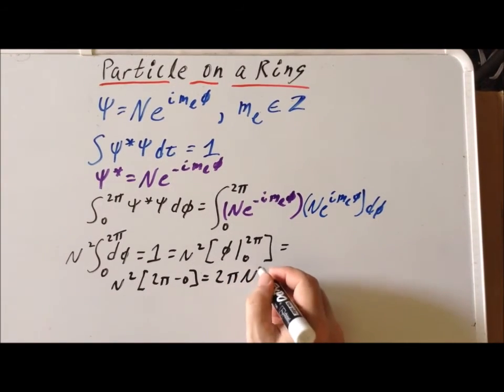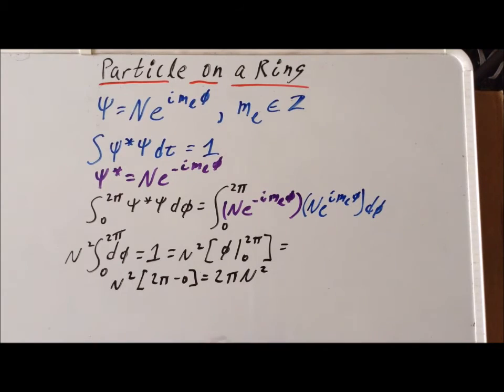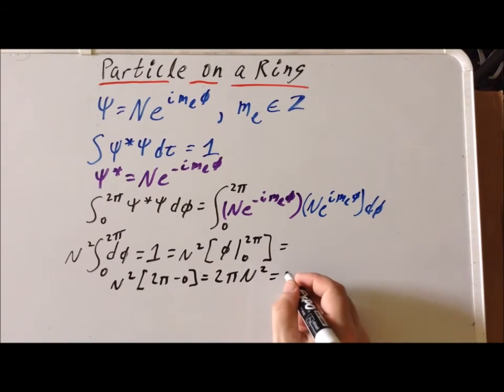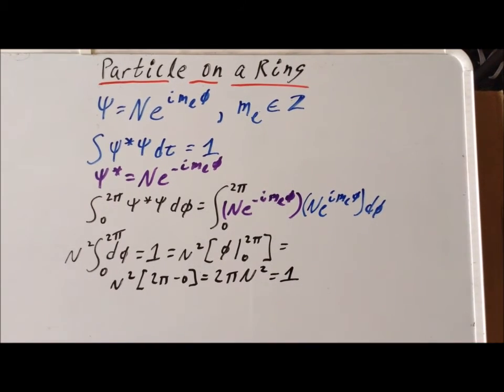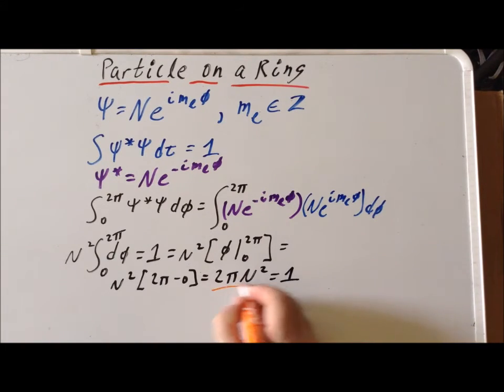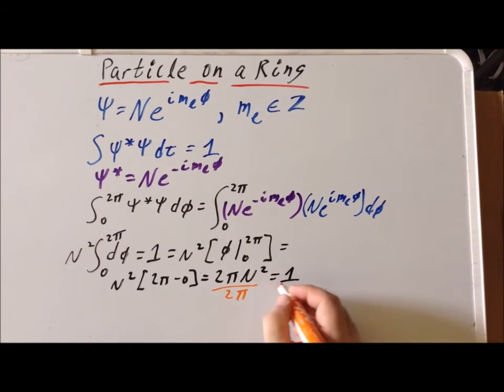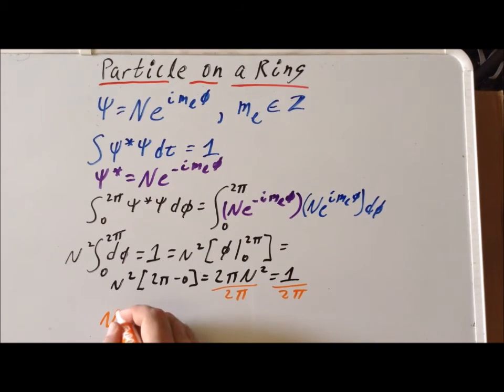And recall, since it's normalized, the entire expression is going to be equal to 1. So now we can divide each side by 2 pi. This gives us that n squared is equal to 1 over 2 pi.